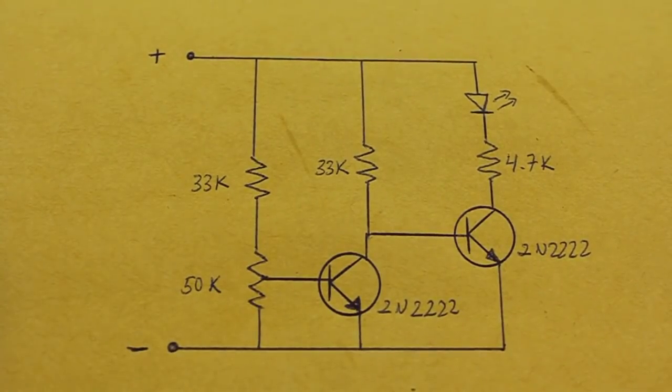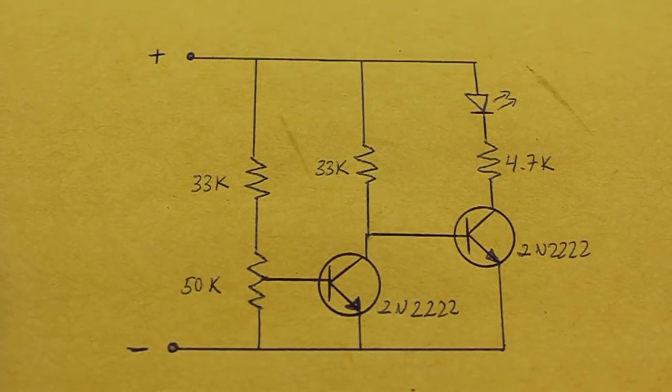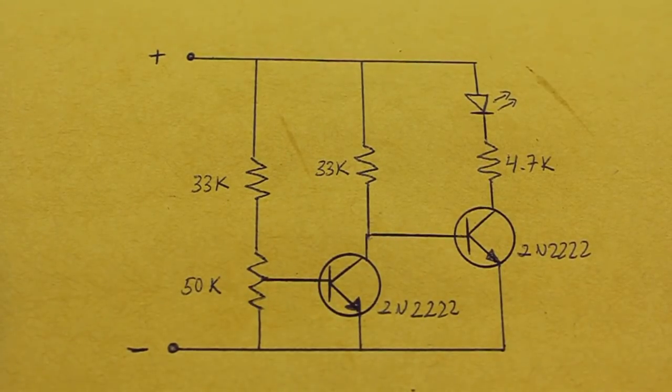Here's the diagram and let's see how it works. Imagine that the potentiometer is not there, so that both transistors have the same base resistance. That means that they will turn on at the same voltage, approximately two volts.